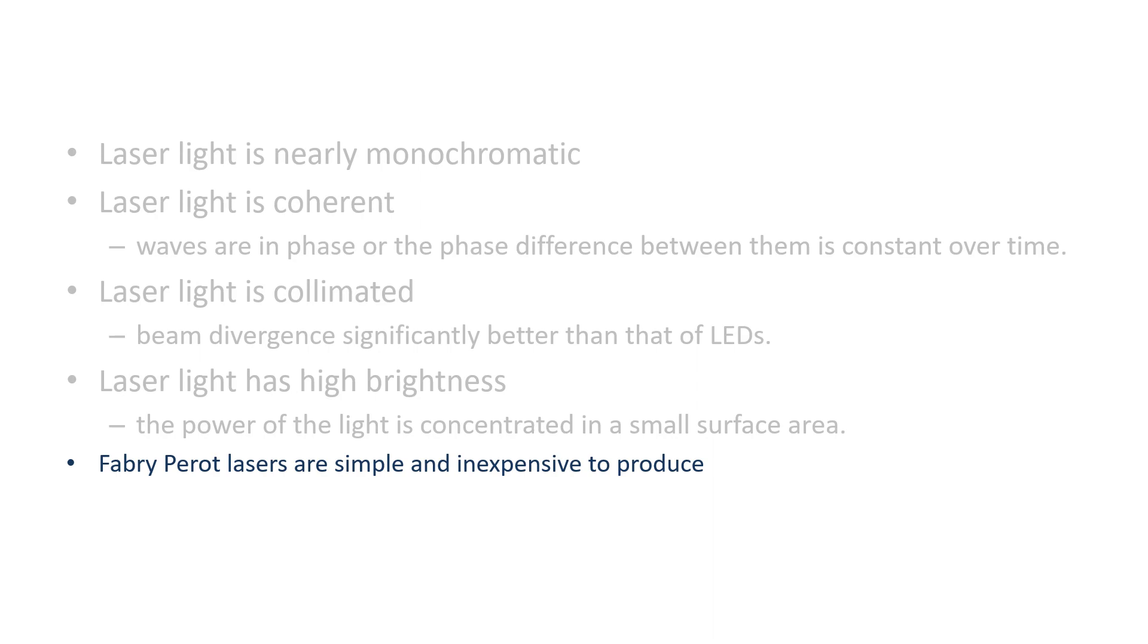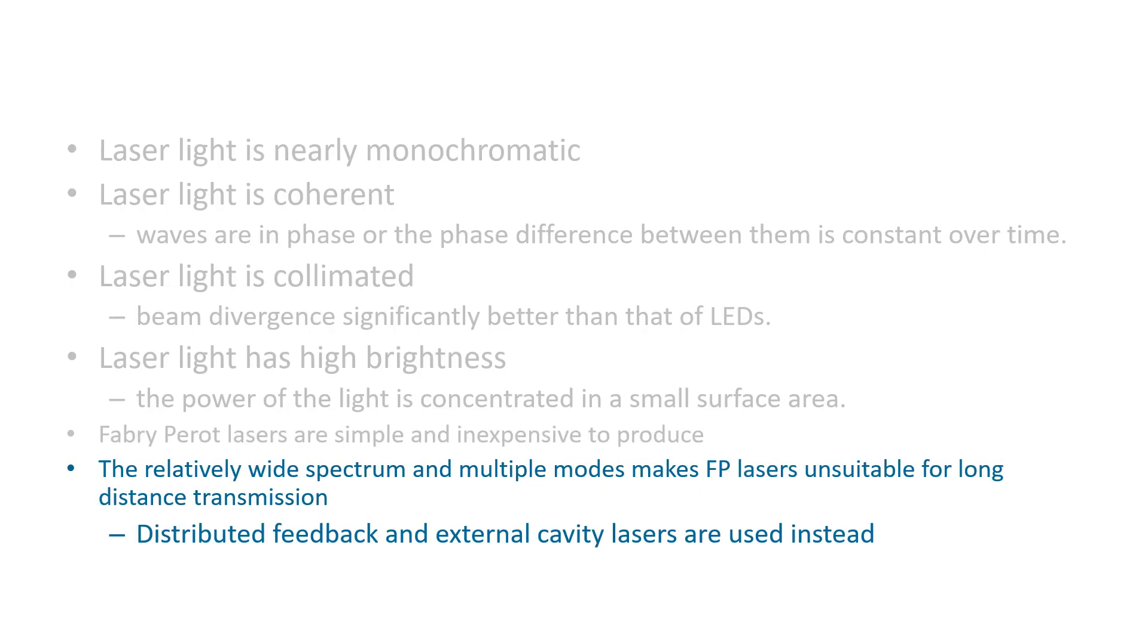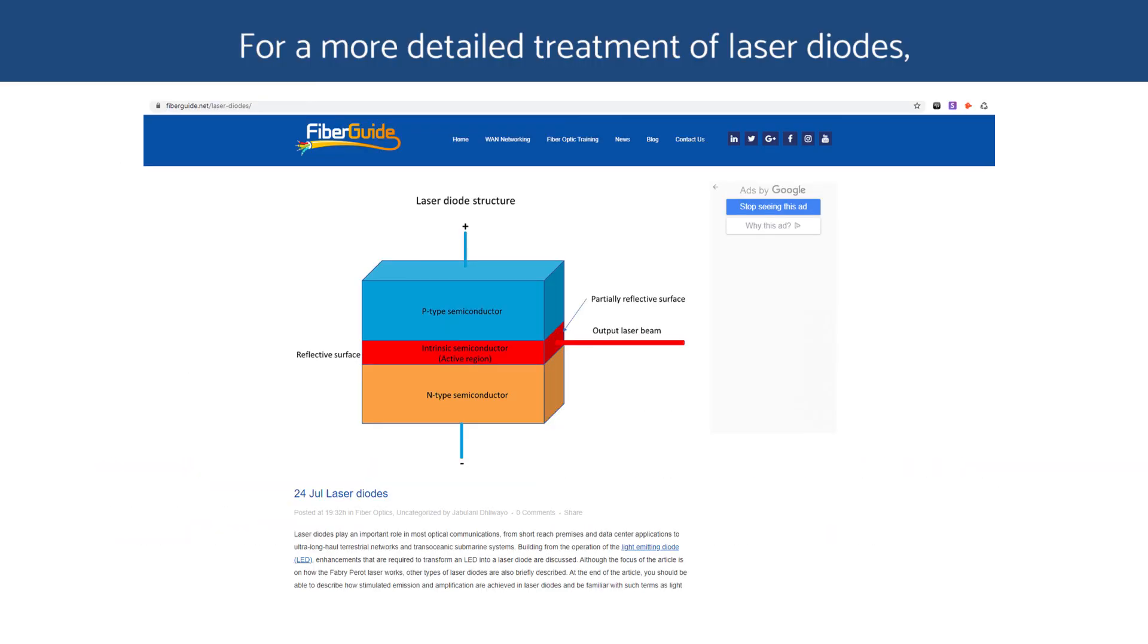Fabry-Perot lasers are simple and inexpensive to produce. For long-distance networks, including long-haul terrestrial networks and submarine networks, single-mode and narrow-line-width lasers, such as distributed feedback lasers, or DFB, and external cavity lasers are used. For a more detailed treatment of laser diodes, please read the FiberGuide blog article on laser diodes.